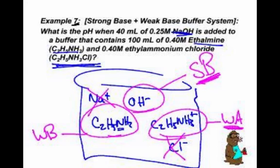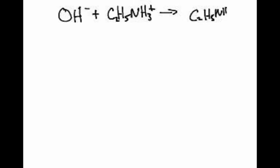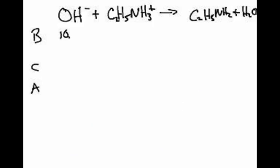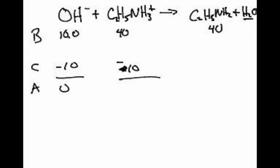So you can take your strong base and react it with your weak acid. So our reaction will be hydroxide, OH negative, plus C2H5NH3 positive makes C2H5NH2 plus water. We'll do our BCA. Now we do our M times V equals moles for each problem. 20 milliliters and 0.25 molar sodium hydroxide, so that's 10 millimoles of hydroxide. That's 40 millimoles of that one and 40 millimoles of the other one. We'll subtract 10, 0 plus 10. Minus 10, so we've got 30 and 50.